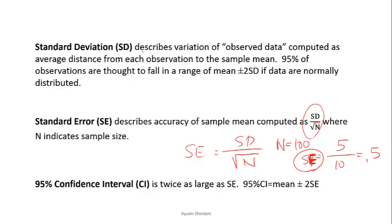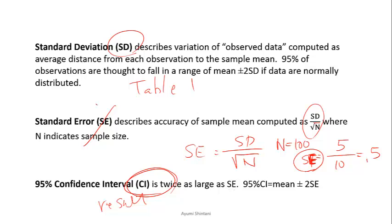Here's the summary. Standard deviation describes variation of observed data, computed as the average distance from each observation to the sample mean; 95% of observations fall in the range of mean plus or minus two standard deviations if data are normally distributed. Standard error describes accuracy of the sample mean, computed as standard deviation divided by the square root of n. The 95% confidence interval is twice as large as SE, computed as mean plus or minus two times standard error. For Table 1, a descriptive table, use standard deviation. For results comparing effects between groups, use confidence interval. Nowhere in the paper should you use standard error.